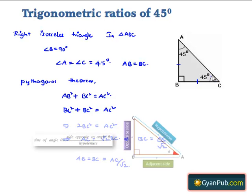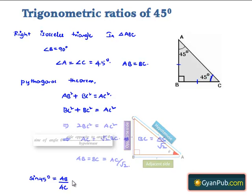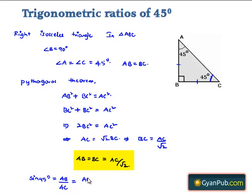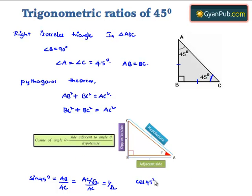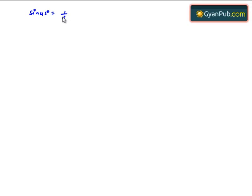Considering base angle C that is 45 degrees, sin 45 degrees is equal to opposite side AB divided by hypotenuse AC, which is equal to AC by root 2 divided by AC, giving us 1 by root 2. Similarly, cos 45 degrees is equal to adjacent side BC divided by hypotenuse AC, which is equal to AC by root 2 divided by AC, giving us 1 by root 2. Therefore, sin 45 degrees equals cos 45 degrees equals 1 by root 2.